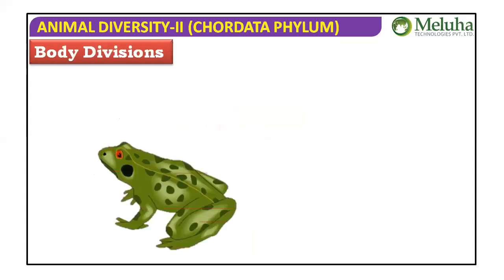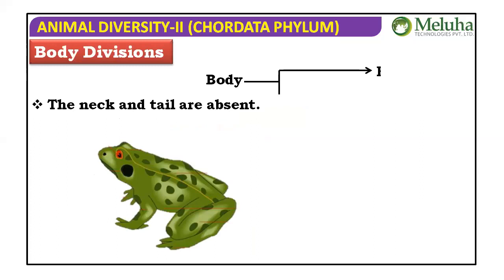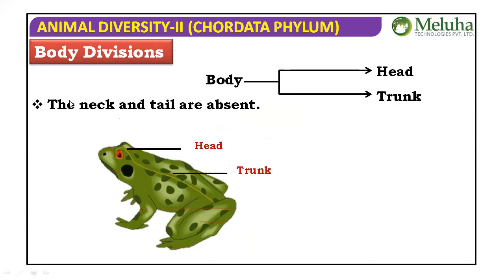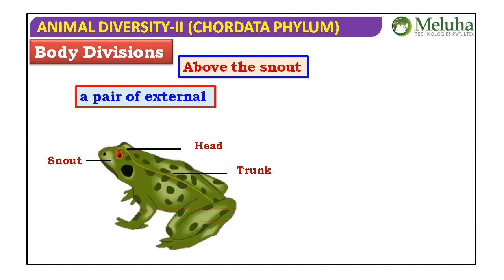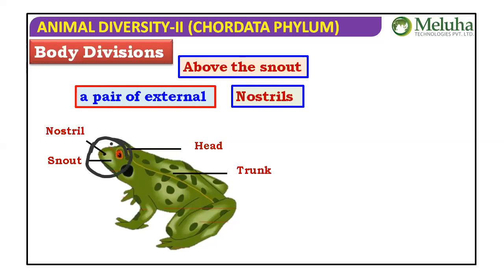Regarding body division: neck and tail are absent in the frog. The body is divisible into head and trunk only. Above the snout, a pair of external nostrils are present.